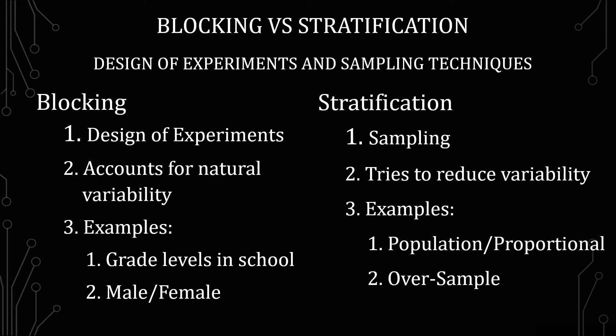Another example is an oversample into a minority population. Say you're trying to focus on how a virus affects a minority population, and that minority population is only about 1 or 2%. Instead of doing a proportional population-based sampling method, you would want to oversample for that population so you can get a clearer picture of what's going on. If you just did 1,000 random samples, you might only get 10 people from that population. But what you're particularly looking for is how the interactions are within that minority population with the virus, and you want to oversample to capture that variability.